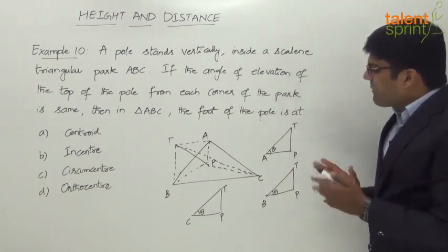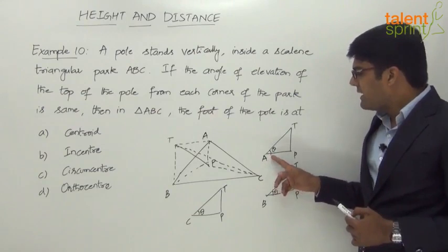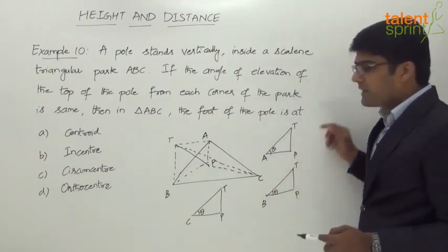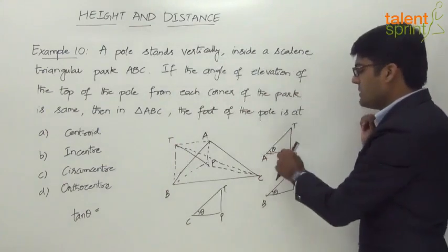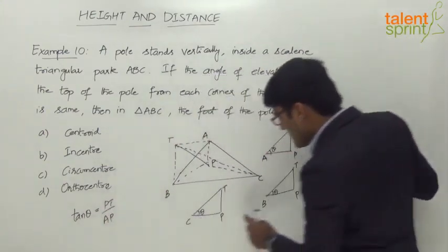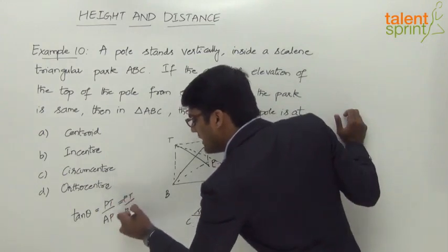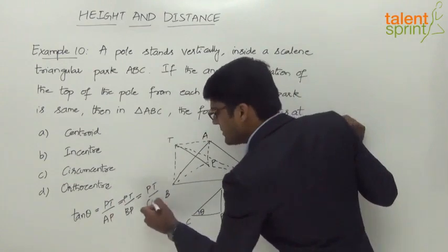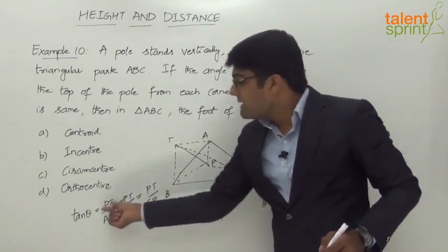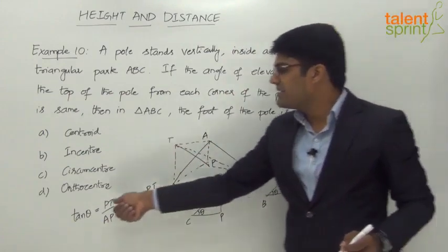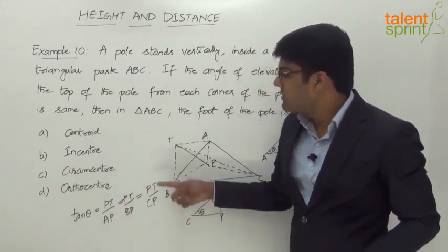Applying the trigonometric ratio tan theta: in the first triangle, tan theta = PT/AP; in the second triangle, tan theta = PT/BP; and in the third triangle, tan theta = PT/CP. Since all three angles are the same, PT/AP = PT/BP = PT/CP. PT is the length of the pole, which is constant, and theta is also the same. This equation holds only when AP = BP = CP.